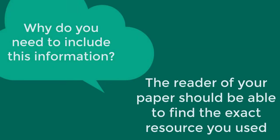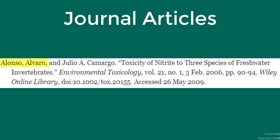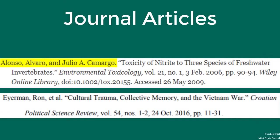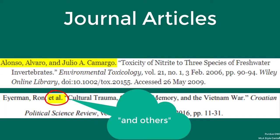These details are needed in your Works Cited page so the readers of your paper can locate the exact resource you used. Journal article citations follow this format: Author last name, comma, first name. If there are two authors, include a comma after the first name, the word 'and', and then write the other author's first and last names in order. If there are three or more authors, write the words 'et al.' after the first author's name. Et al. is a Latin phrase that means 'and others', and it replaces the other authors' names.